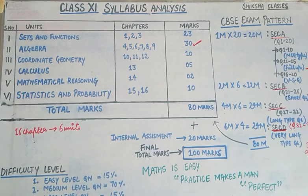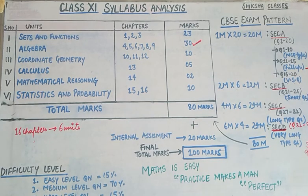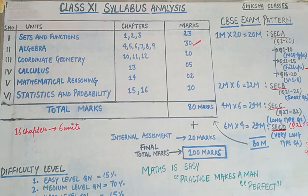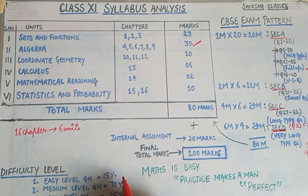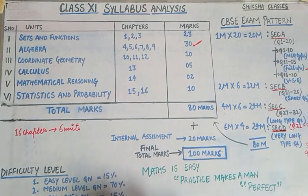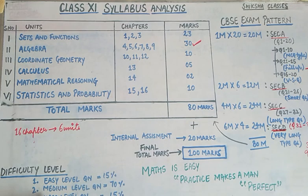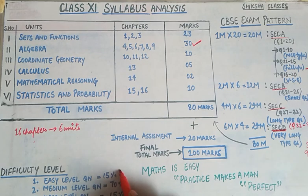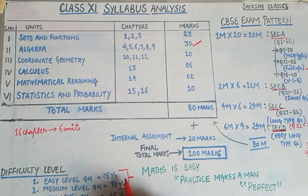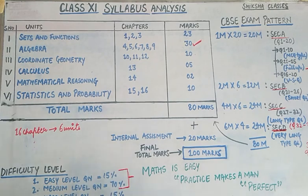Next we will talk about difficulty level. In a general CBSE paper, about 15% questions are easy — any student can attempt them. Around 45% are medium level questions that an average student can easily attempt. Even the harder questions — if you study properly throughout the year — an average student can easily score well and achieve 90 plus.